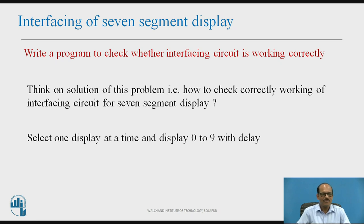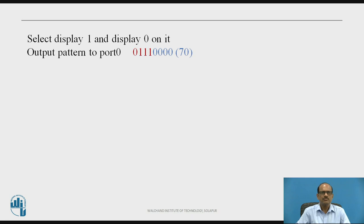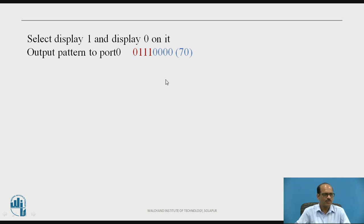In this way, we can check all 4 seven-segment displays, and repeat this procedure for remaining 3 displays. For example, select display 1 and display 0 on it. The bit pattern outputted at port 0 — output pattern to port 0 — is 0111, which means display 0 is selected. Output 70H to port 0; it will select display 1 and output 0 to display 1.